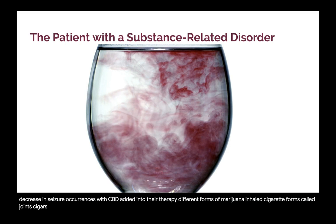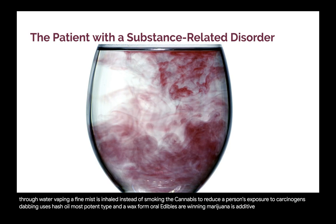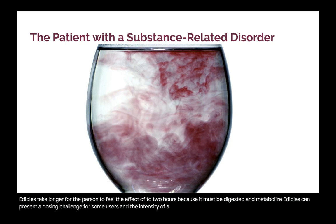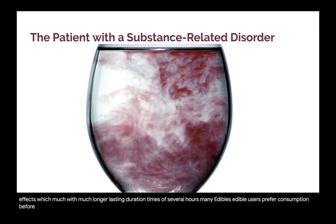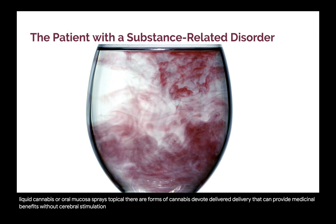Different forms of marijuana: inhaled — cigarette forms called joints; cigars hollowed out and filled with cannabis called blunts; hookah pipe or bong which filters smoke through water; vaping — a fine mist is inhaled instead of smoking to reduce exposure to carcinogens; dabbing — uses hash oil, the most potent type, in wax form. Oral edibles are when marijuana is added to foods or beverages; edibles take up to two hours to feel the effect because they must be digested and metabolized. The intensity of edibles is much greater, causing full-body psychoactive effects with much longer-lasting duration of several hours. Many edible users prefer consumption before bedtime to aid with sleeping and wake up pain-free.